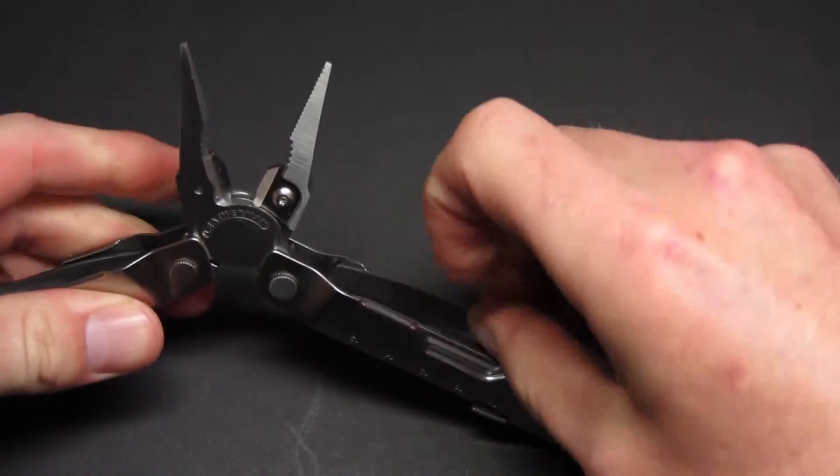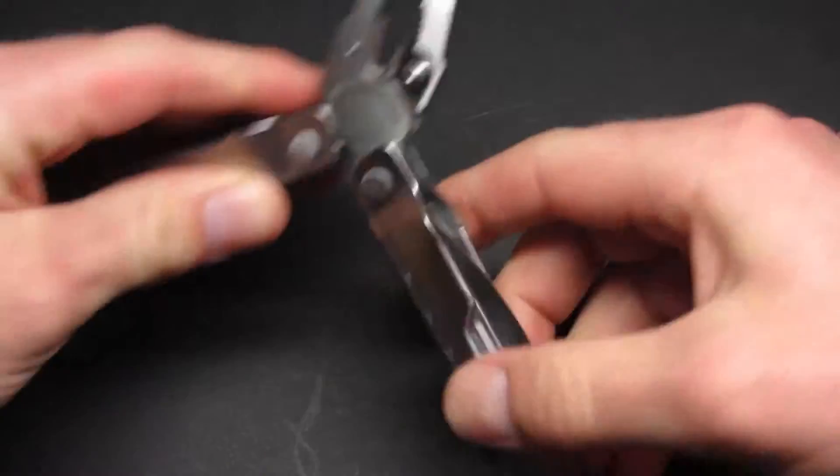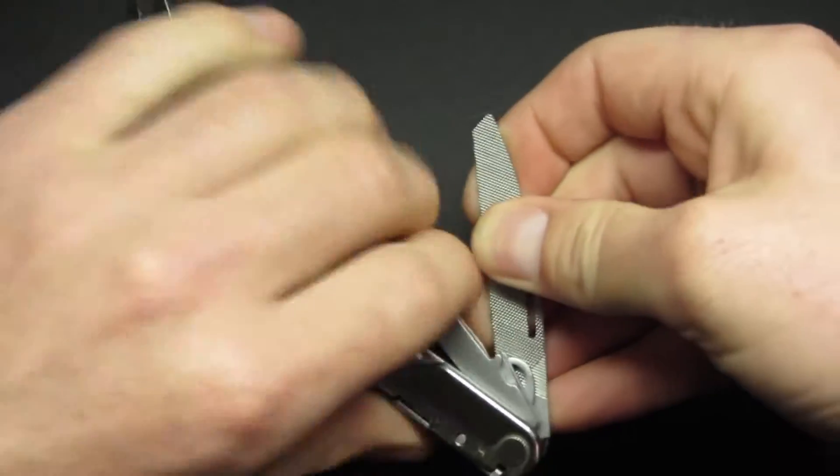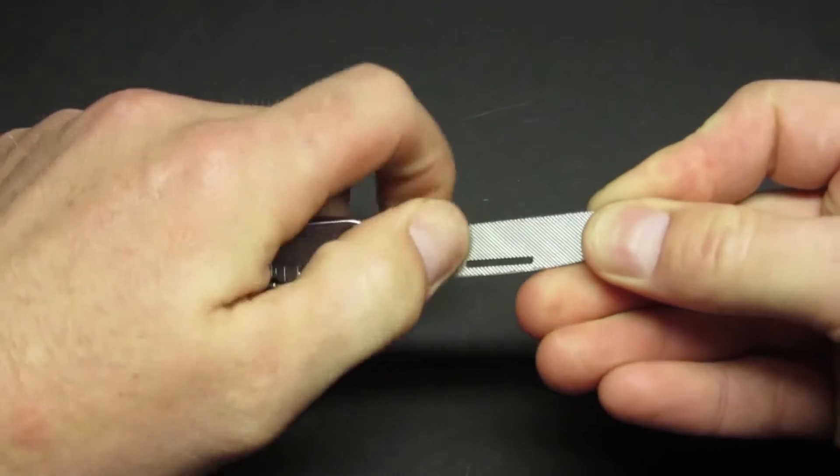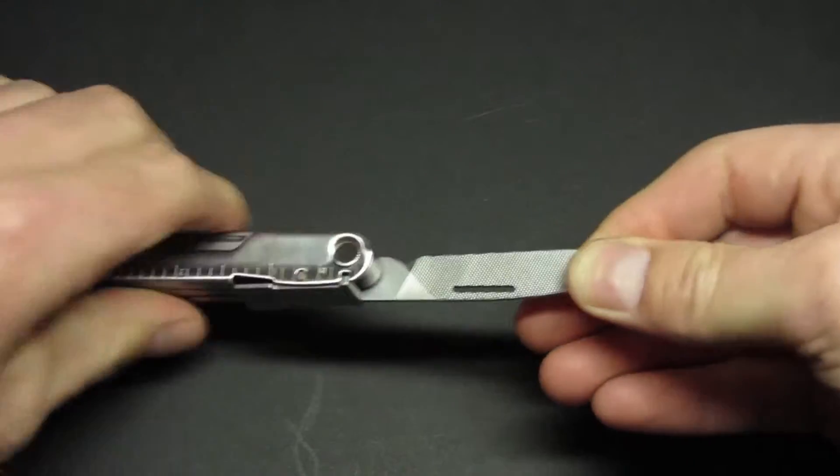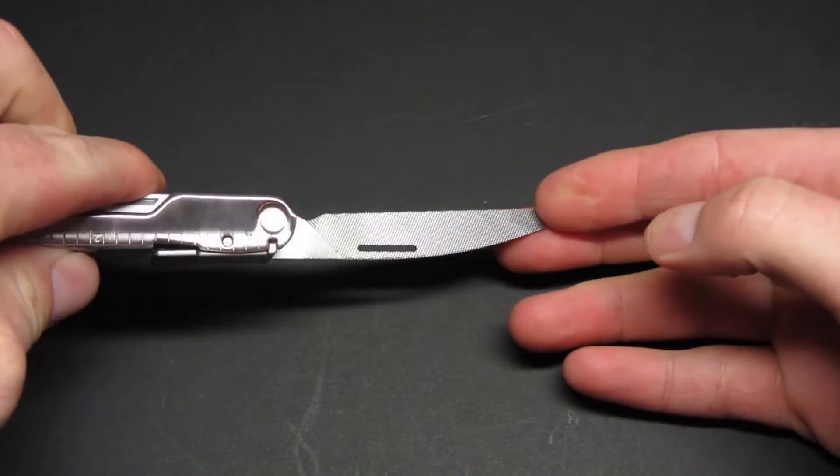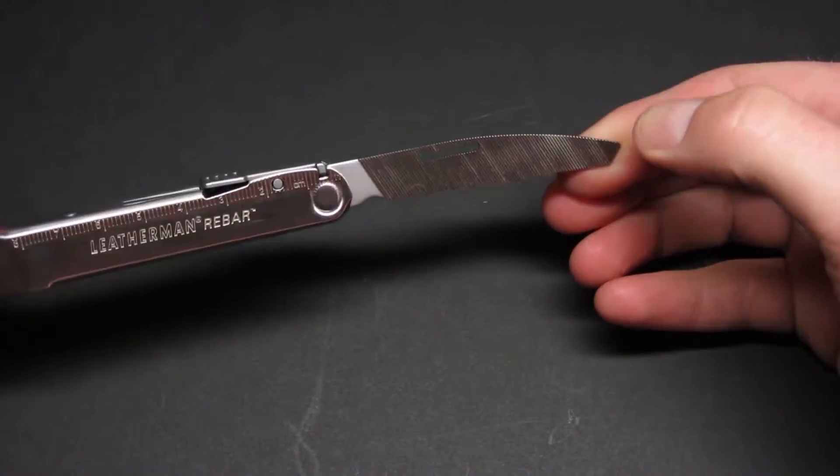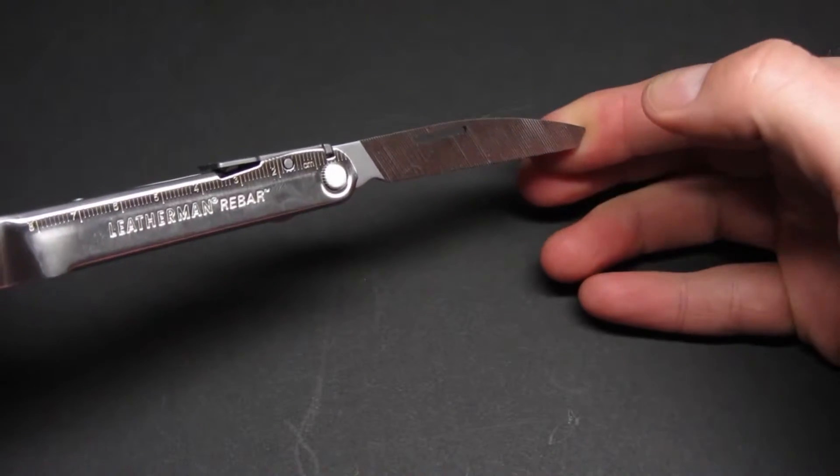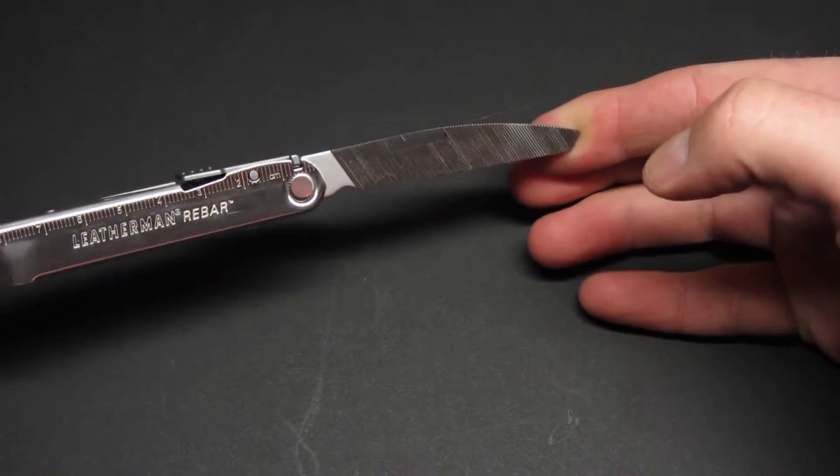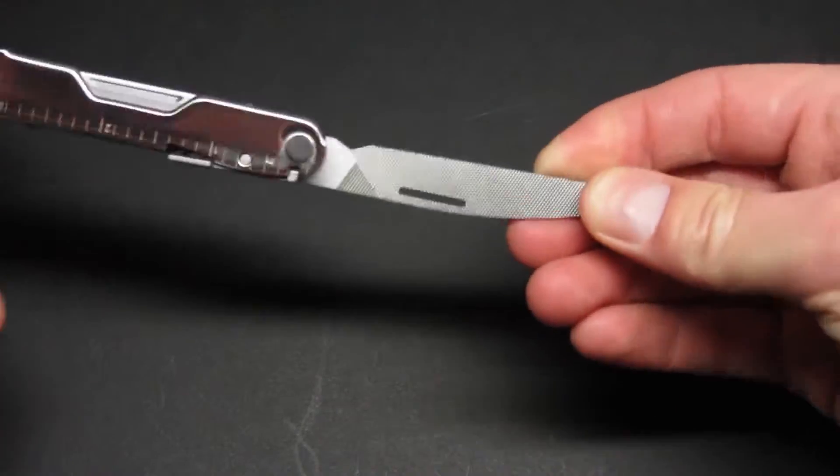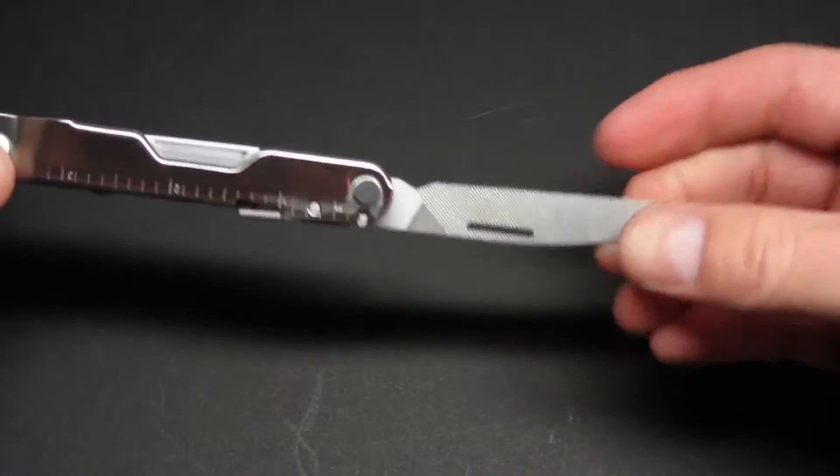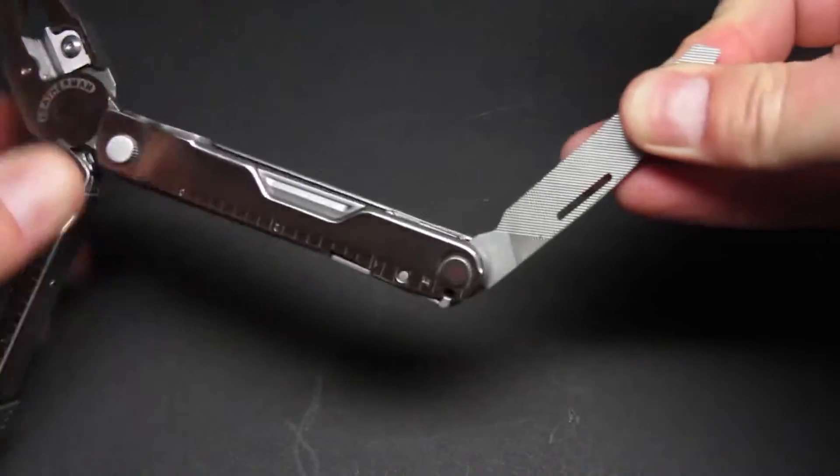The other blade that you have is a file. On the other side, that's your saw, we'll get to that next. But you do have a metal file and it's pretty aggressive. Haven't used it on a lot of metal, but I just kind of polished up a little piece of metal and it seemed to work pretty good. It's abrasive on both sides as well as the bottom, so it's a pretty abrasive file.